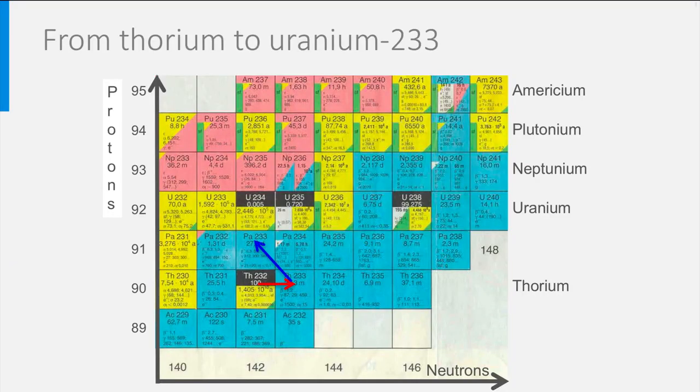Thorium-232 itself is not fissile and cannot be used as fuel in a nuclear reactor. However, when it captures a neutron, the product thorium-233 decays quickly to protactinium-233, which decays with a half-life of about one month to uranium-233.